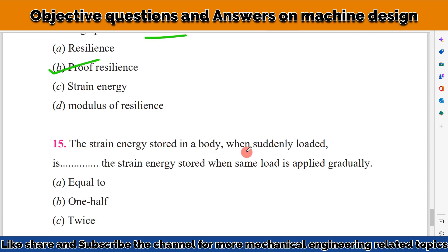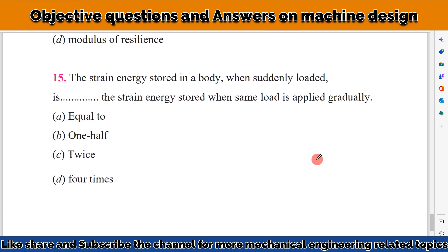For instance, the strain energy stored in the body when suddenly loaded versus the strain energy stored when the same load is applied gradually - it is generally four times. The strain energy stored in the body when suddenly loaded is four times the strain energy when the same load is applied gradually.